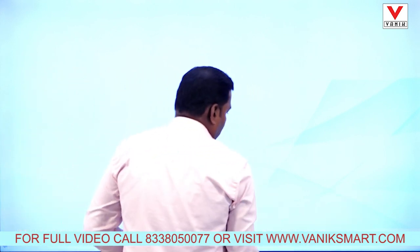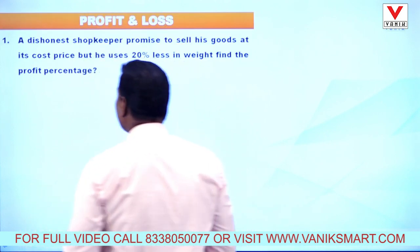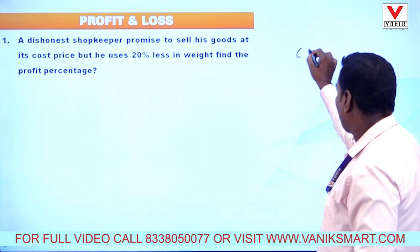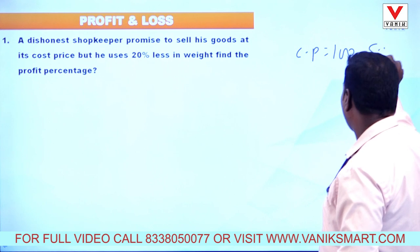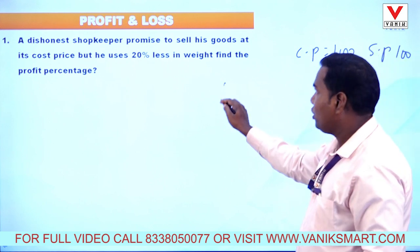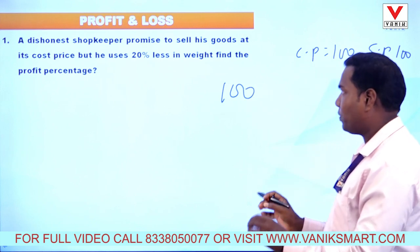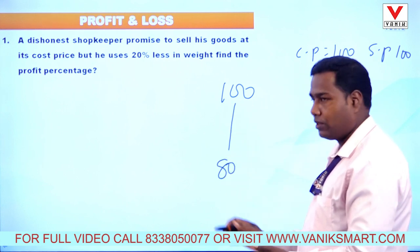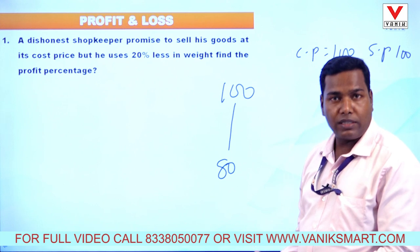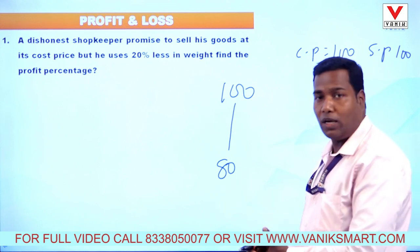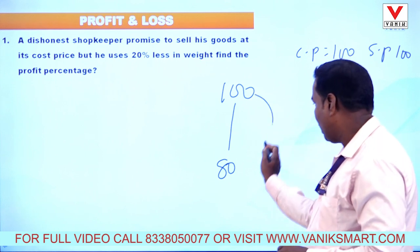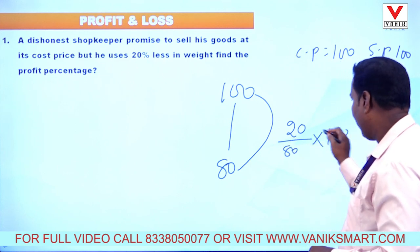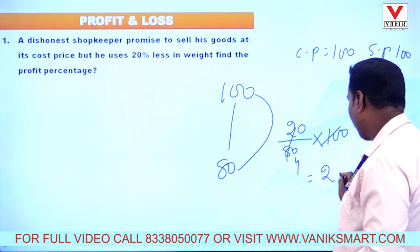Question 1: A dishonest shopkeeper promises to sell his goods at cost price — cost price 100, selling price 100. But he uses 20 percentage less in weight, meaning cost price is 80 rupees for 800 grams. He sells at 100 rupees, so cost price is 80 rupees, profit is 20 rupees. Profit percentage = 20/80 × 100 = 25 percentage.